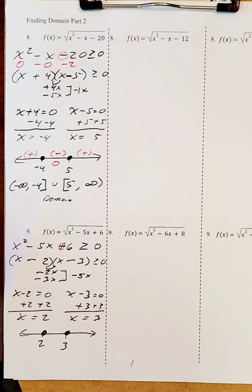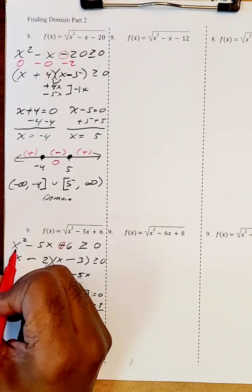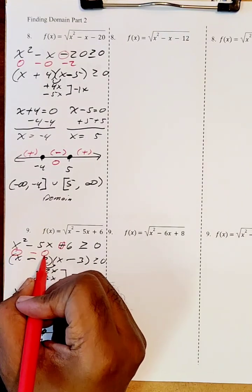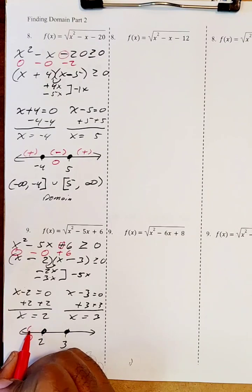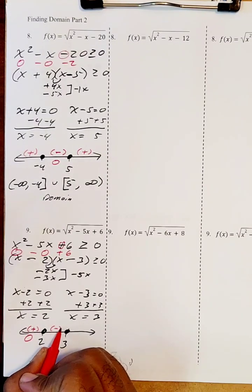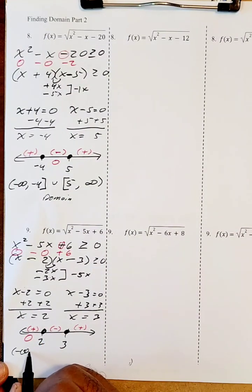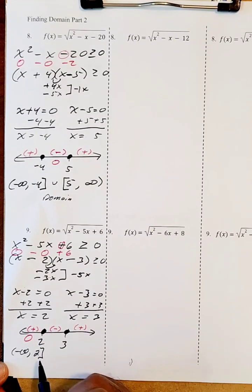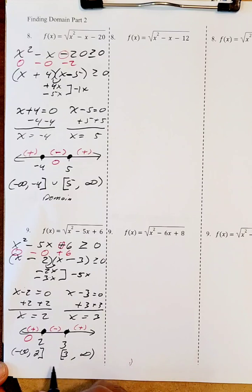I love to use zero if I'm able to, and zero appears on the left side here. Zero squared is zero, five times zero is zero, then plus six — zero minus zero plus six is six, which is positive. So the left region is positive, the middle region is negative, and the right region is positive. The domain uses the positive parts: from negative infinity to two with a bracket, union three to positive infinity with a bracket on three. This is my domain.